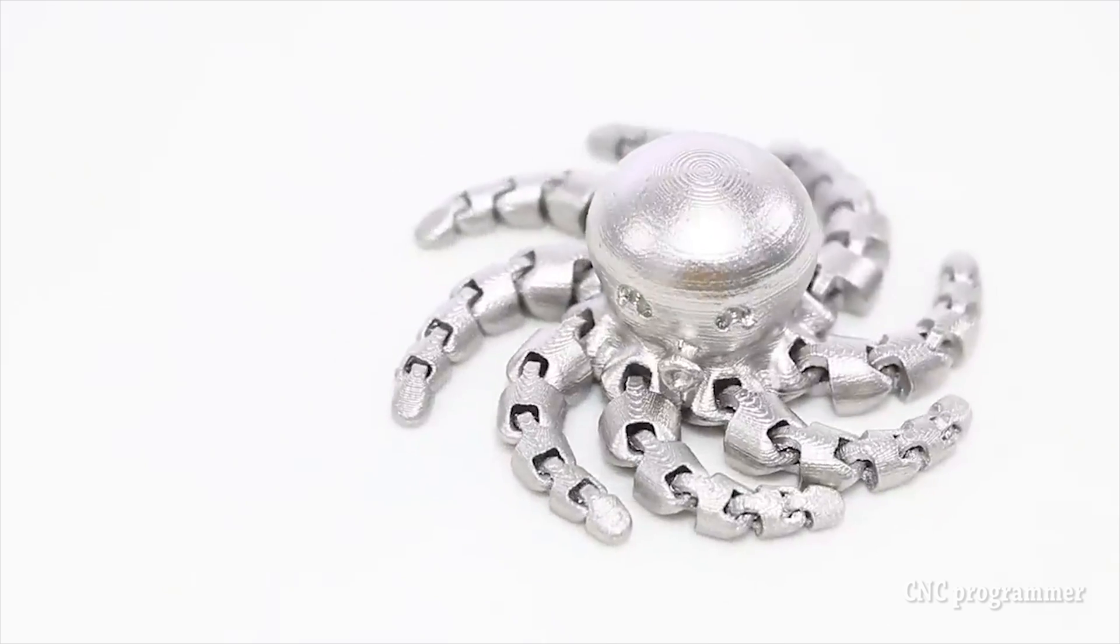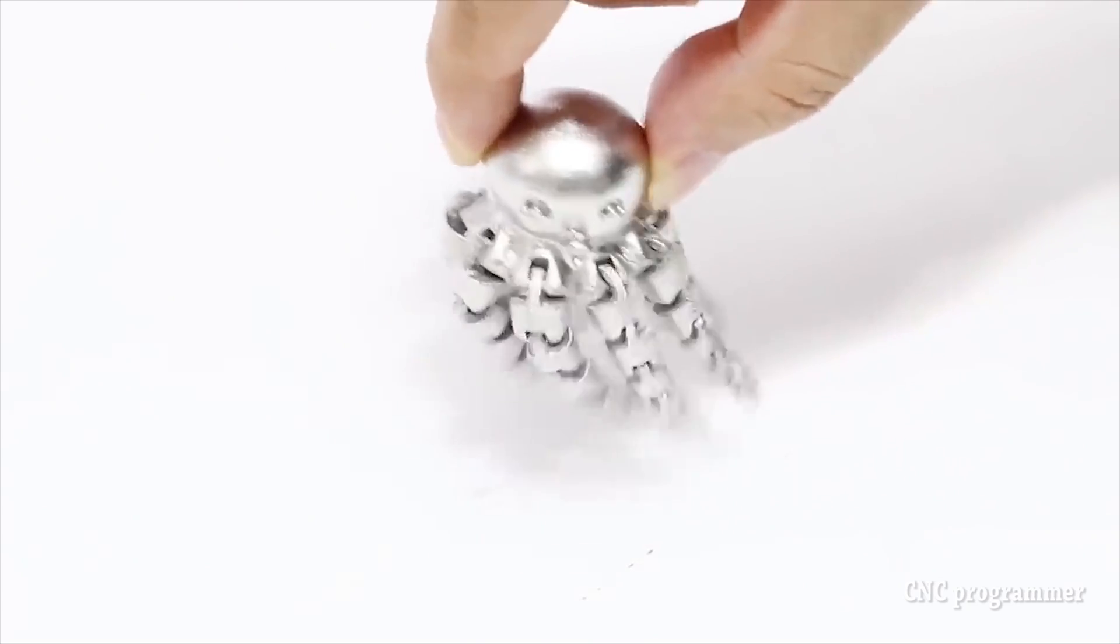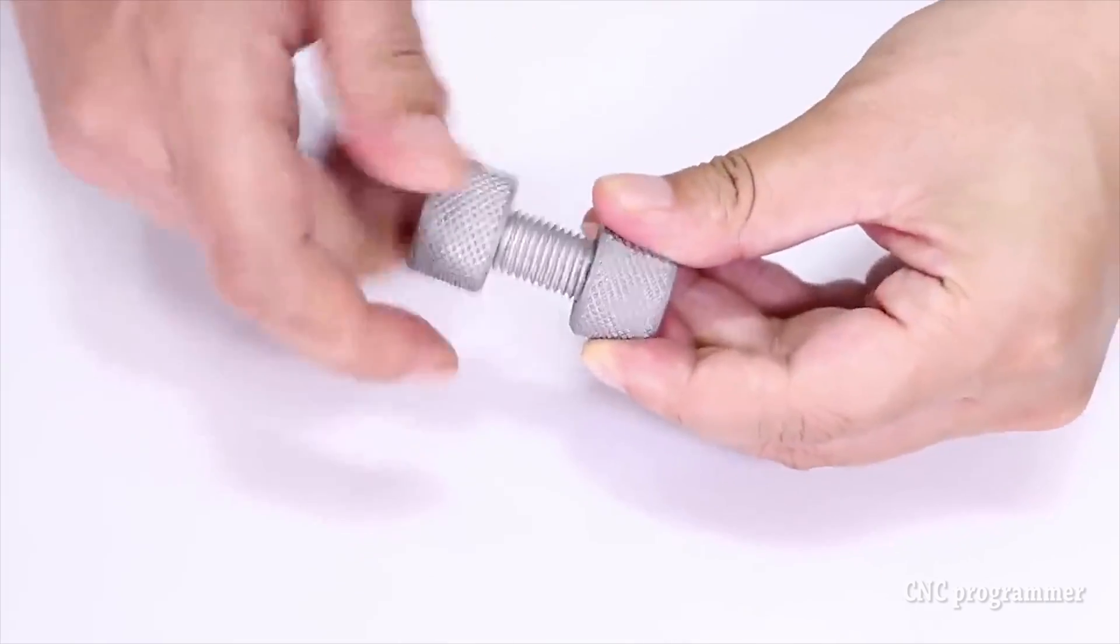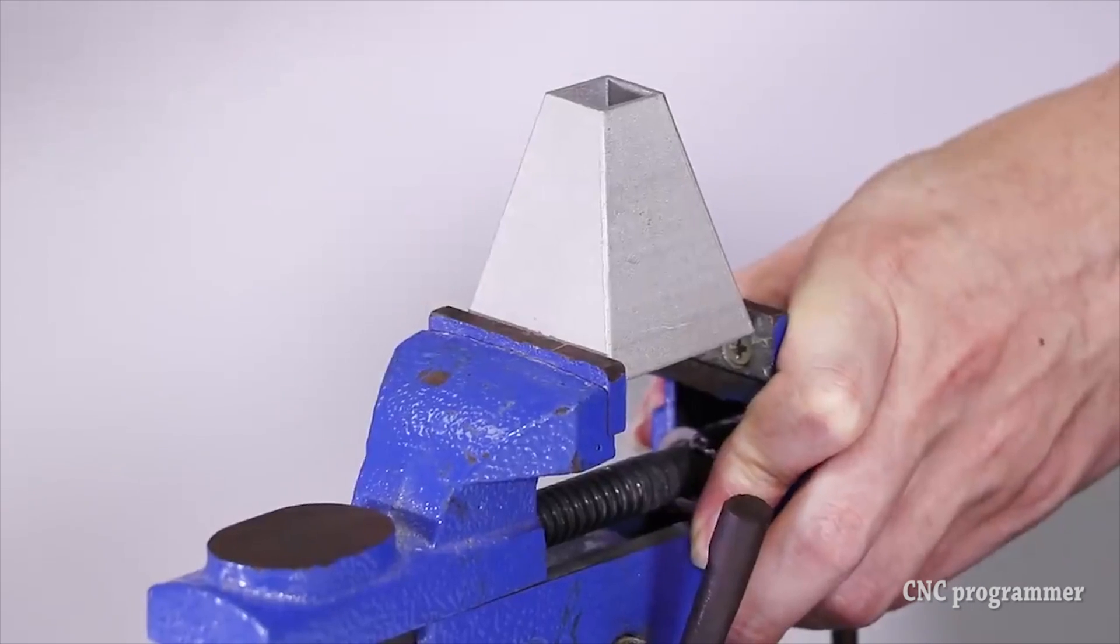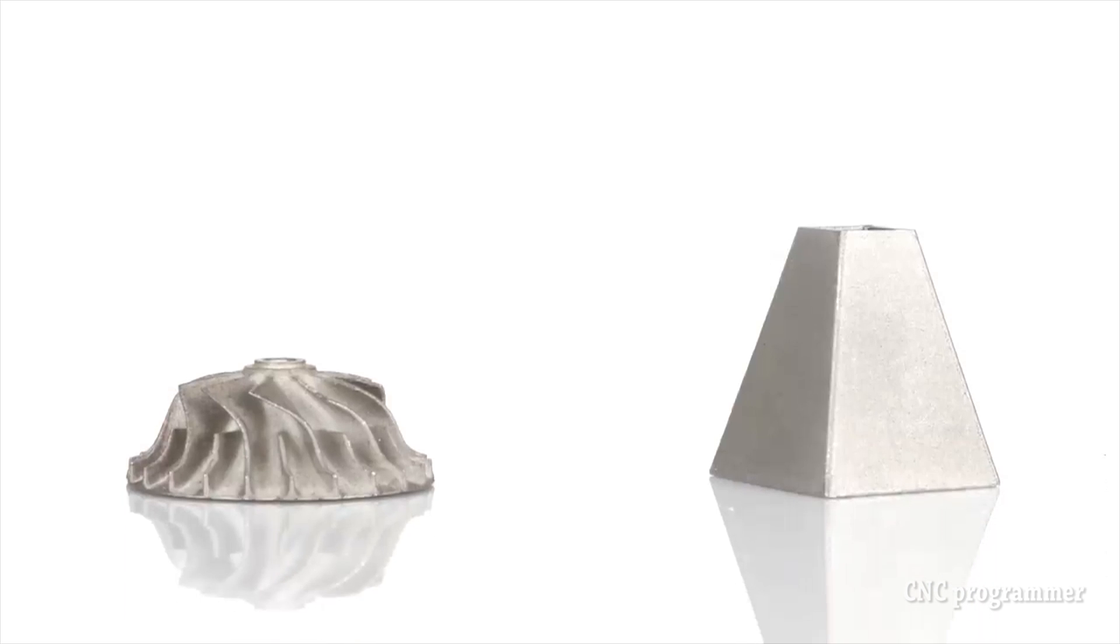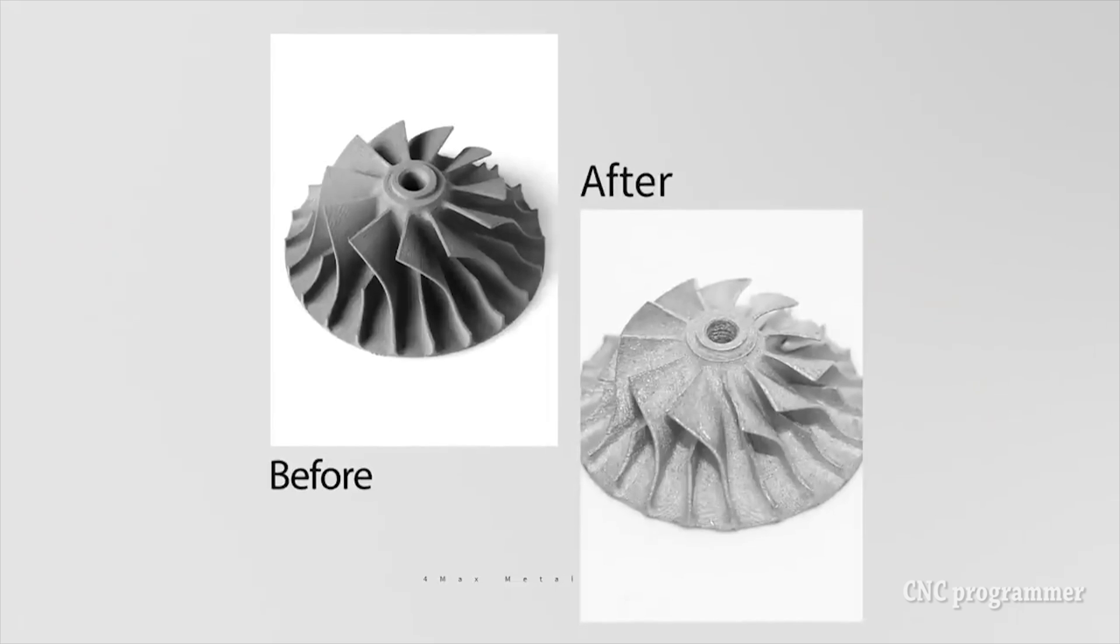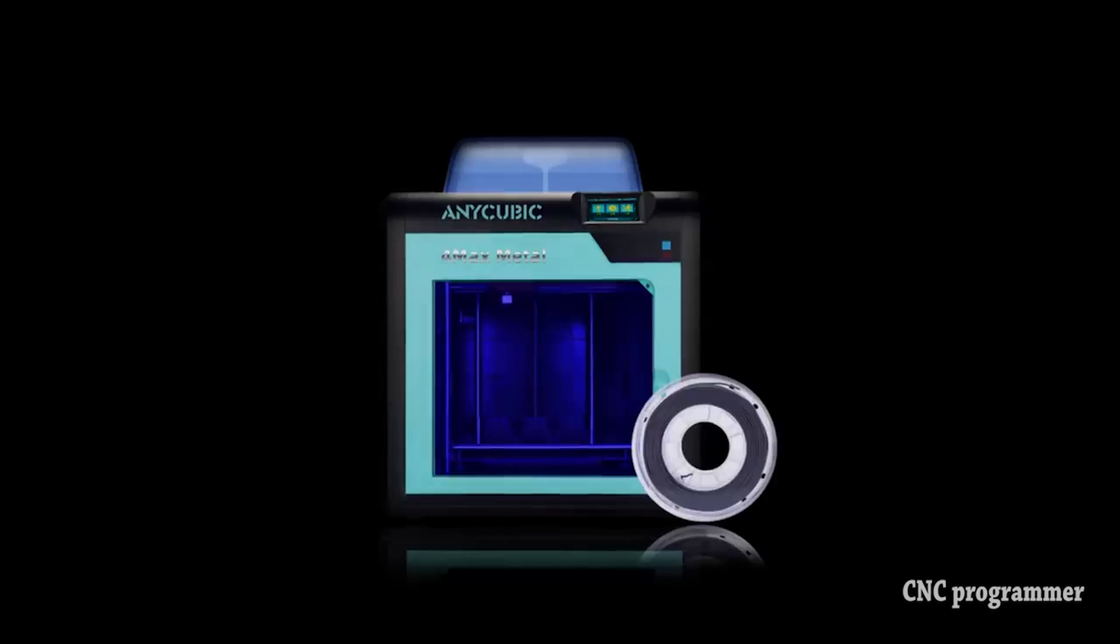Reduced lead times: The rapid prototyping capabilities of FDM translate seamlessly to metal printing, enabling faster iteration and product development cycles. Material Selection - FDM Metal Printers support a wide range of metal alloys, including stainless steel, titanium, aluminum, and even precious metals like gold and silver, providing flexibility for diverse applications.